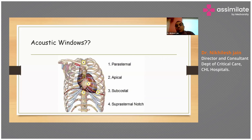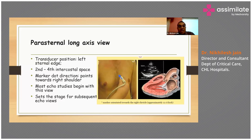We start off with the parasternal long axis view, which rests on the left sternal edge. Most of the times the image is acquired from the second to fourth intercostal space. The marker direction points towards the right shoulder. Most echo studies will begin with this view and it sets the stage for subsequent echo acquisitions. If you look at the image, you can see the mitral valve opening into the left ventricle and the left ventricular outflow tract going into the aortic valve. Higher than that is the septum and the right ventricular outflow. This is how a typical parasternal long axis view looks.